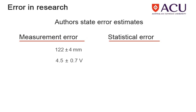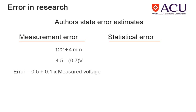Sometimes, instead of the plus or minus symbol, a value is put in brackets — this corresponds to the error. In some devices, the error changes with the size of the measurement, and a formula for the error is provided.